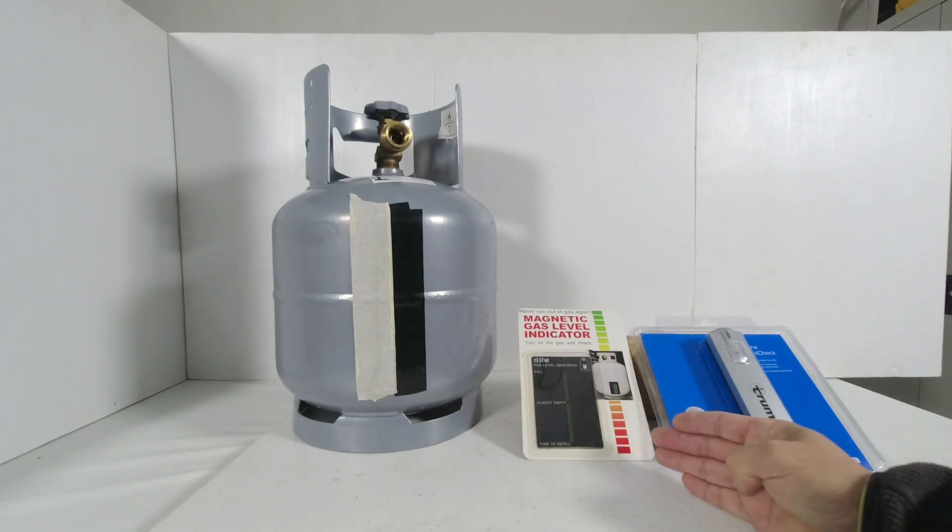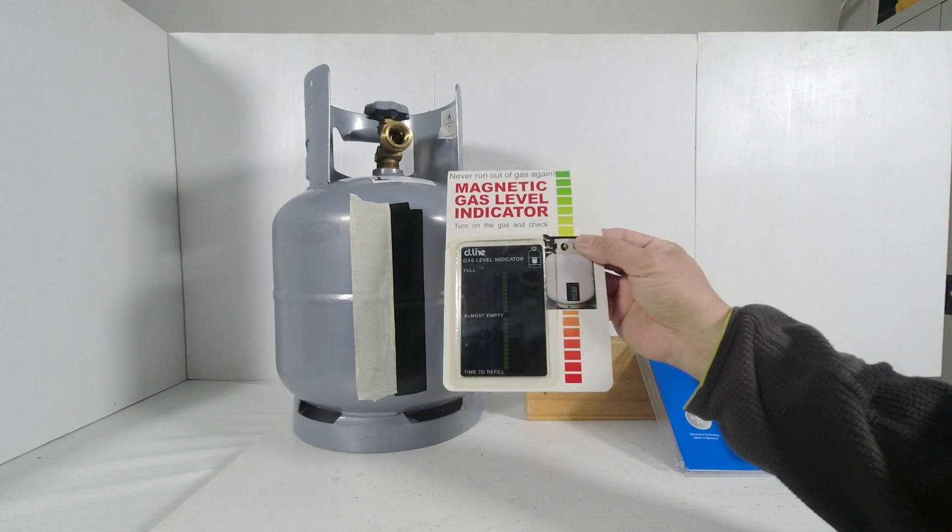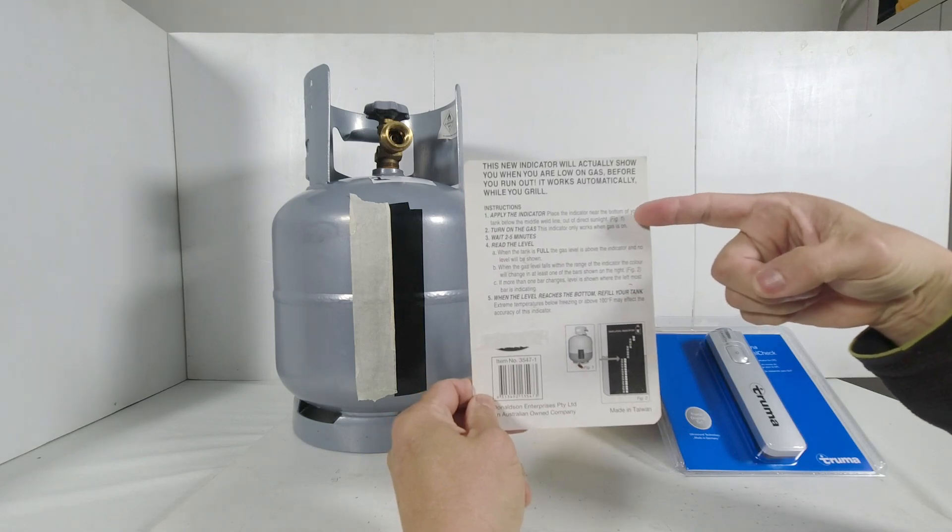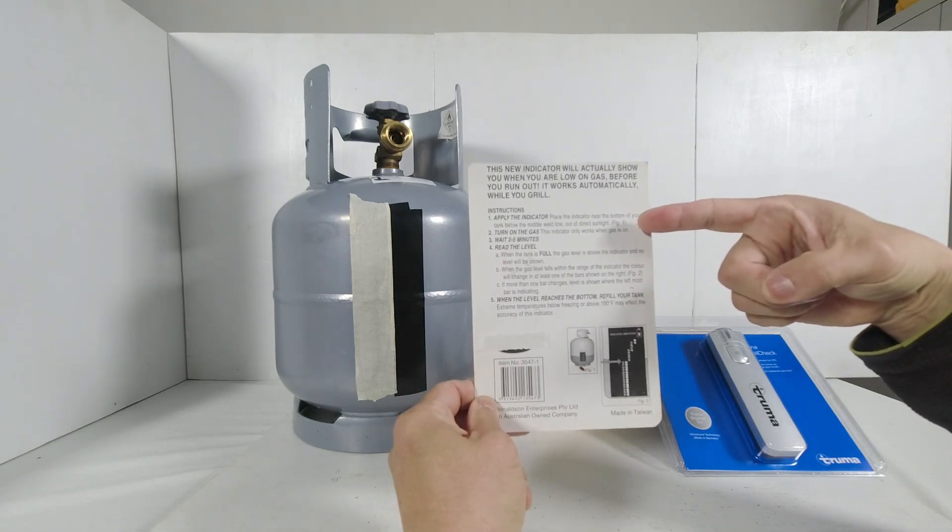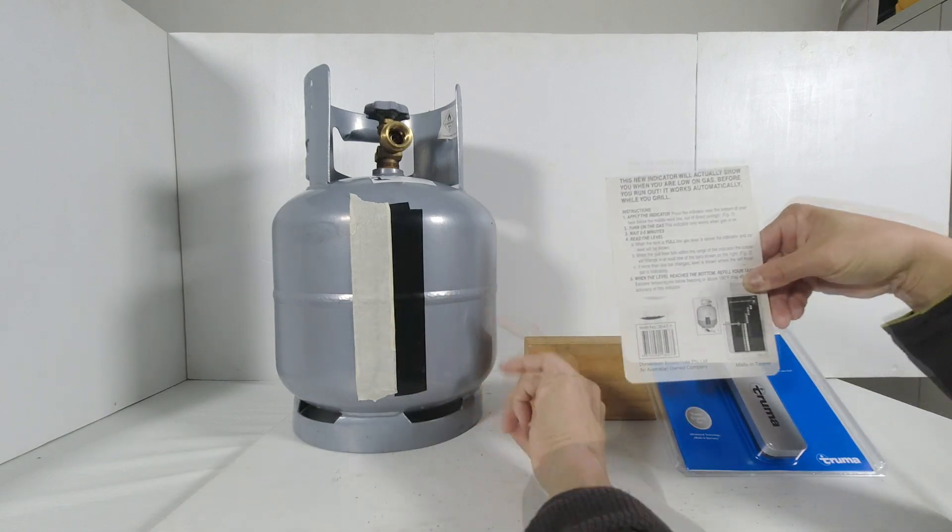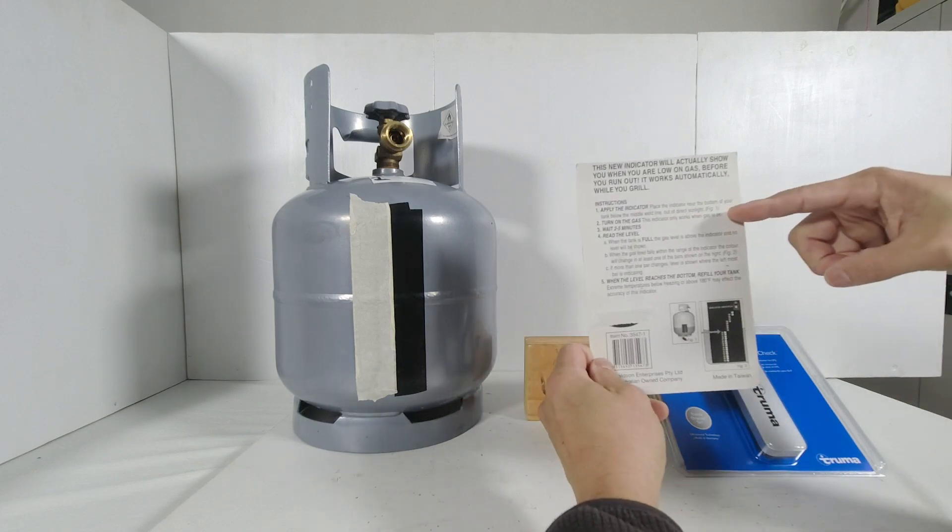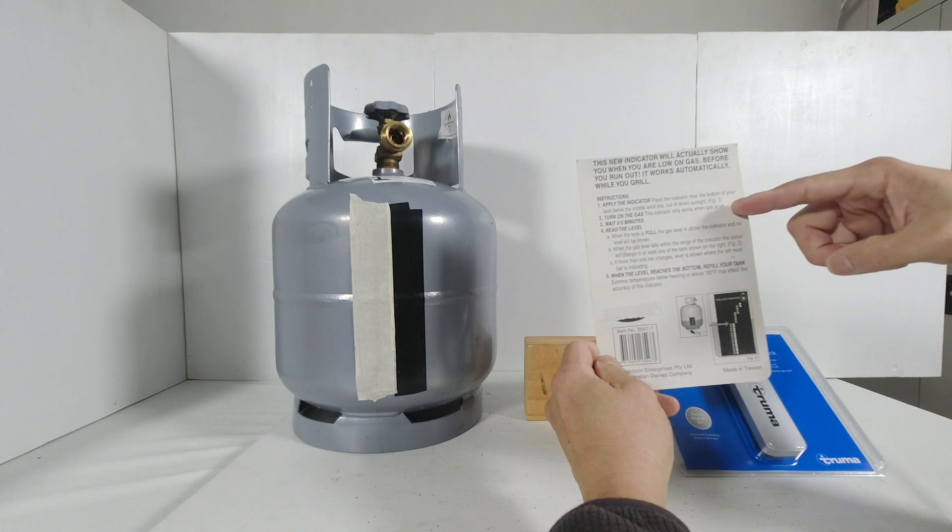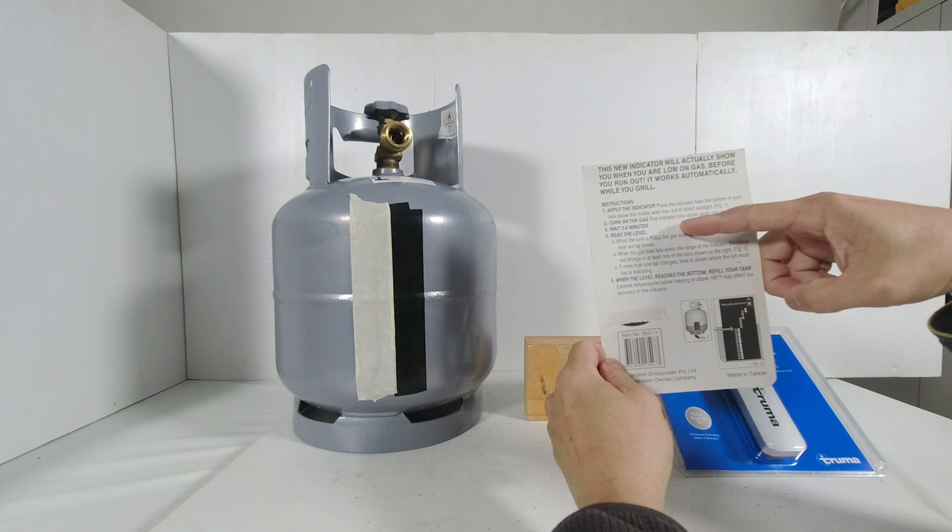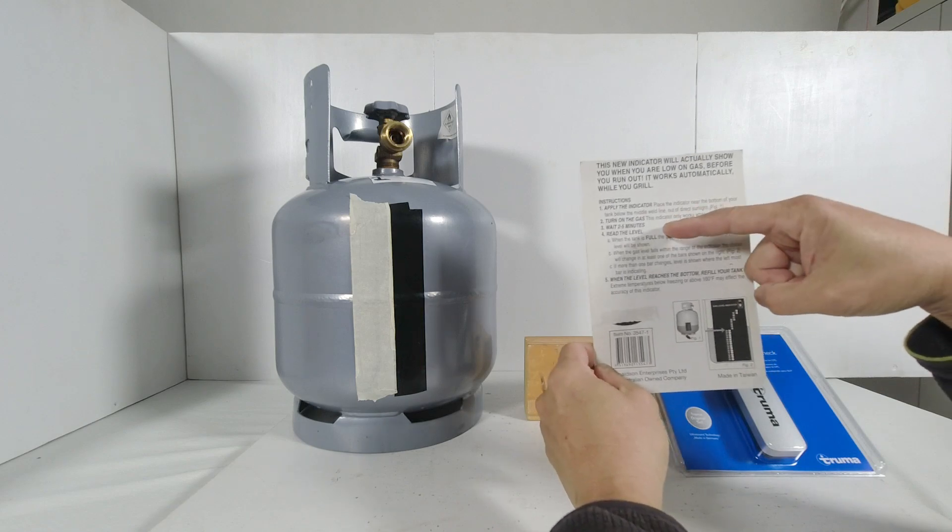Let's start with the simplest gas level indicator, this magnetic indicator which uses a temperature sensor backing. On the back, the instructions say to apply the indicator near the bottom of the tank below the middle weld line. Then importantly, it says turn on the gas. This indicator only works when the gas is on and I'll explain why, and to wait two to five minutes after using the gas then to read the level.